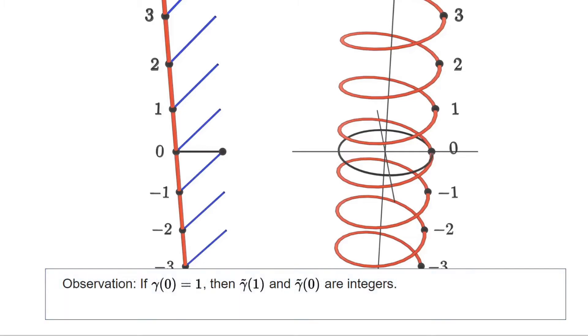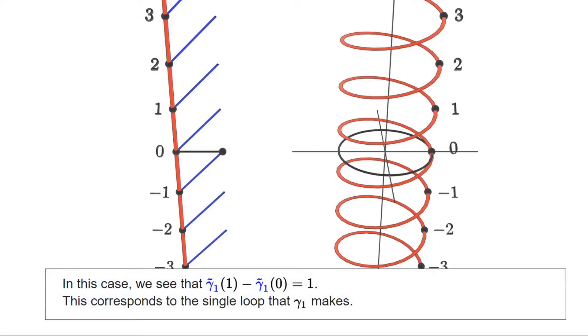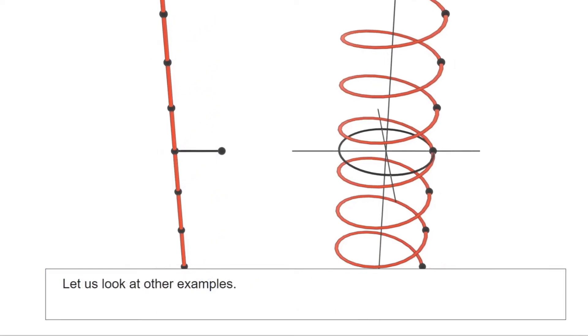In fact we can reason as follows. Given any loop in S¹ starting and finishing at the point 1, once we lift it to a curve γ tilde, we'll have that γ tilde must finish and end at some integer. This means that the difference between γ tilde of 1 and γ tilde of 0 is an integer as well, and in fact it will be the number that measures how much γ is turning around this one. For this reason we call this difference the turning number. Our previous reasoning shows that this difference does not depend on the lift. In the concrete case of γ₁ that turns clockwise once, we see precisely that the turning number is 1.